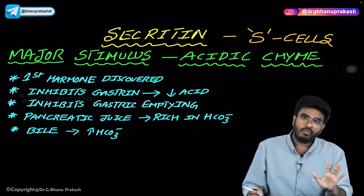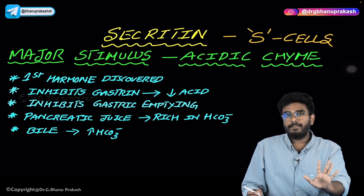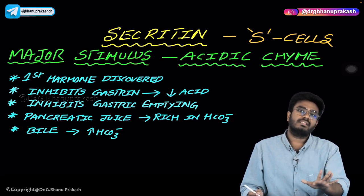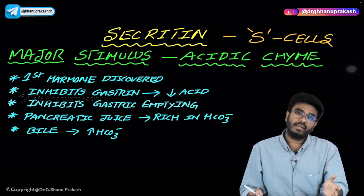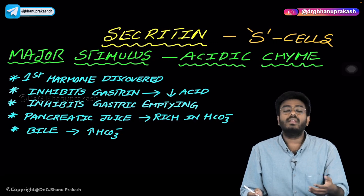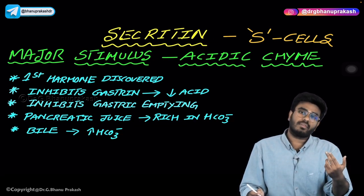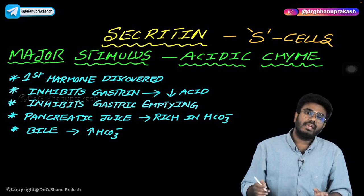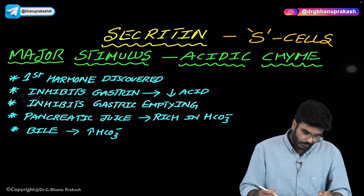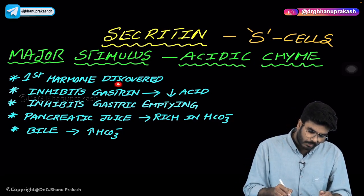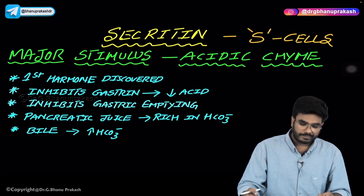Wherever you encounter secretin, remember: secretin always increases bicarbonate levels in secretions — in pancreatic juice and in bile — making duodenal secretions more rich in bicarbonates to neutralize acid from the stomach and prevent damage to the duodenum. Secretin is also the first hormone to be discovered in humans and is known as nature's antacid.